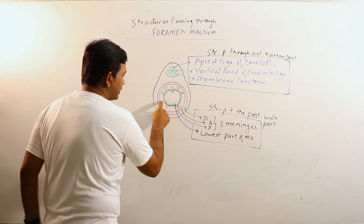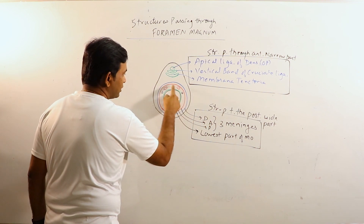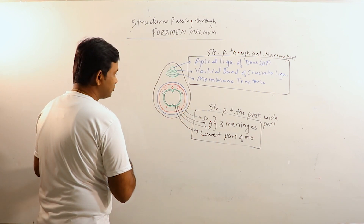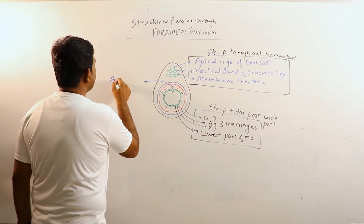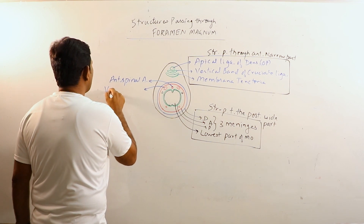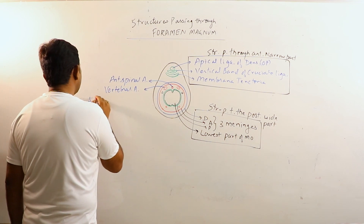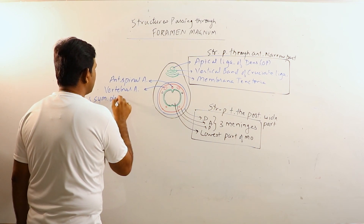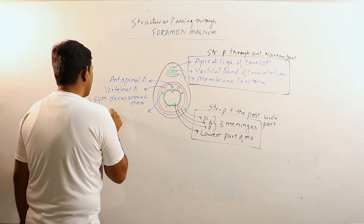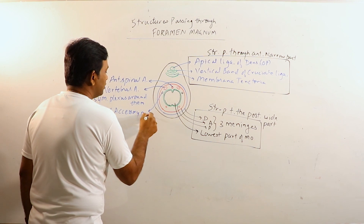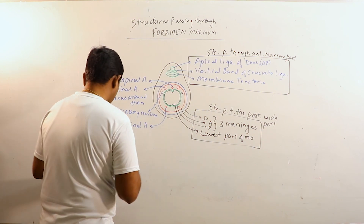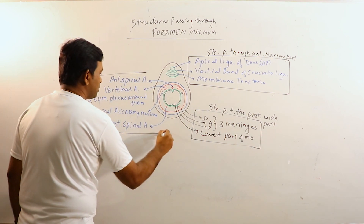There is another area, the Subarachnoid space. The structures passing through the Subarachnoid space are: the Anterior Spinal Artery, the Vertebral arteries surrounded by the Sympathetic Plexus around them, the Spinal Accessory Nerves, and the Posterior Spinal Arteries.